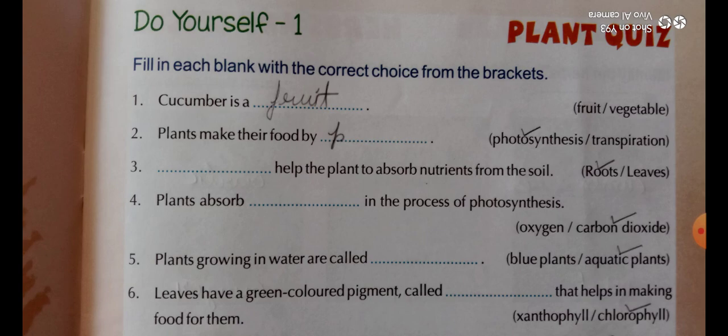Question five: plants growing in water are called blue plants or aquatic plants? The answer is aquatic plants. Question six: leaves have a green color pigment that helps in making food for plants. That pigment is called chlorophyll — C-H-L-O-R-O-P-H-Y-L-L.